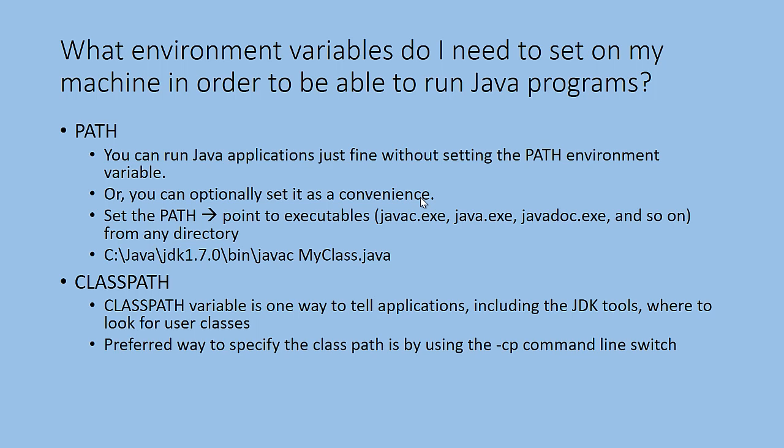So instead of setting the CLASSPATH, you can pass the data in the -cp command as an argument and then use it. This is how you should use it: javac -cp or -classpath, whatever it is, and then the classpath where your custom library is set, and then your Java class file.